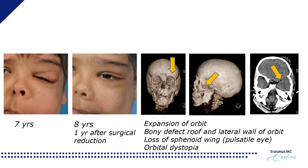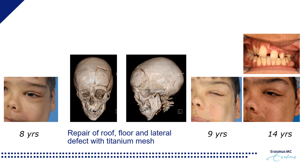At age 7 we decided to perform surgical correction of the craniofacial skeleton. This was done via a bicoronal approach, taking down the frontal bone and the supraorbital rim to gain access to the orbital area. Through this approach we repaired the roof, floor, and lateral wall defect using titanium mesh. It is essential to use metal in these cases because orthologic bone grafts will be lost over time due to the ongoing process of neurofibromatosis.